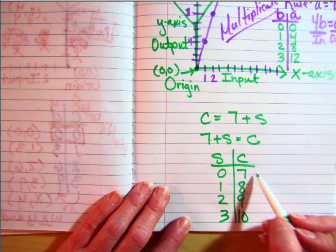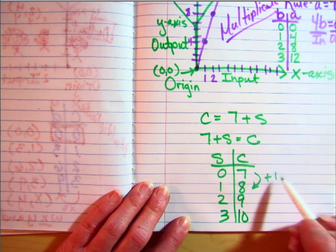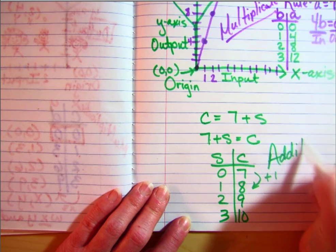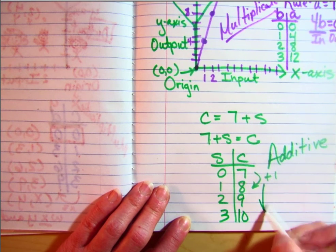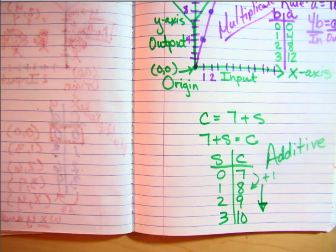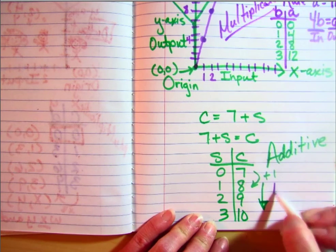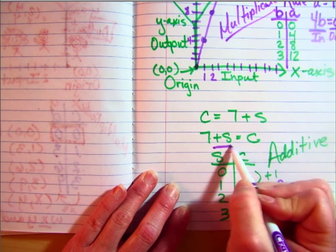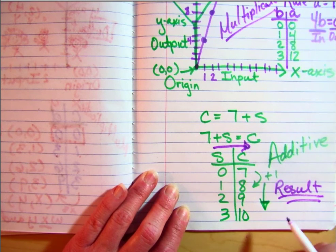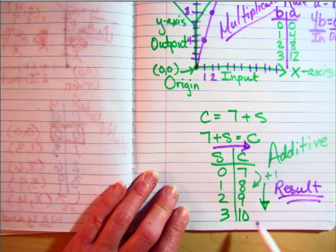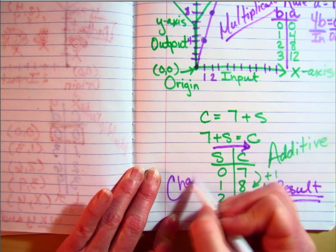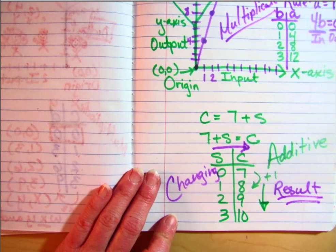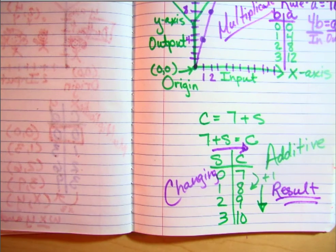A lot of kids want to say the rule is plus 1, but this isn't a rule — this is just a result of it being an additive pattern. Don't look at the progression downward; you don't want to ever base your rule on that. Make sure you're looking at what is happening to S to get C, what is happening to X to get Y, because the input side is what you're changing and the output side is what you're getting.